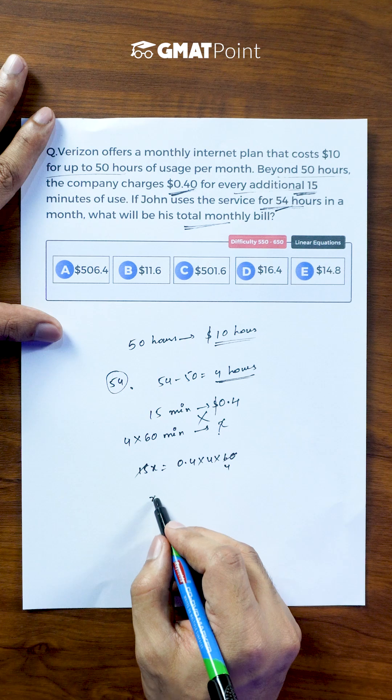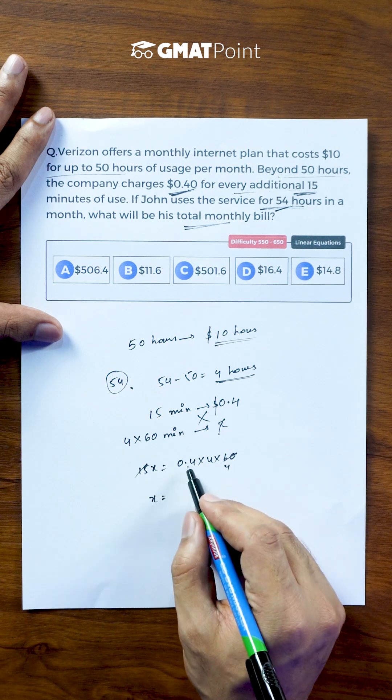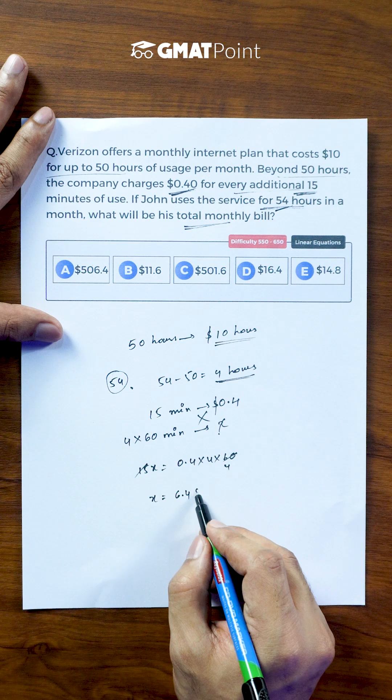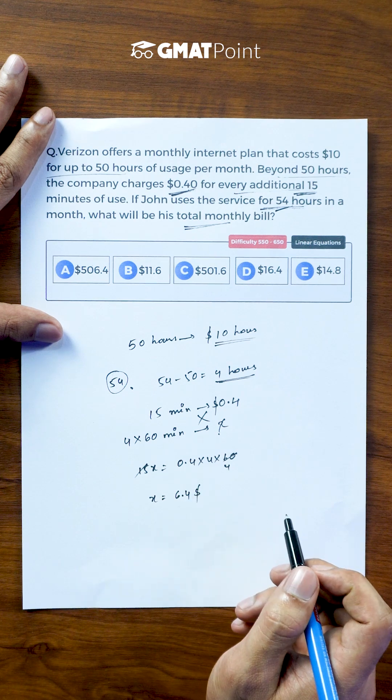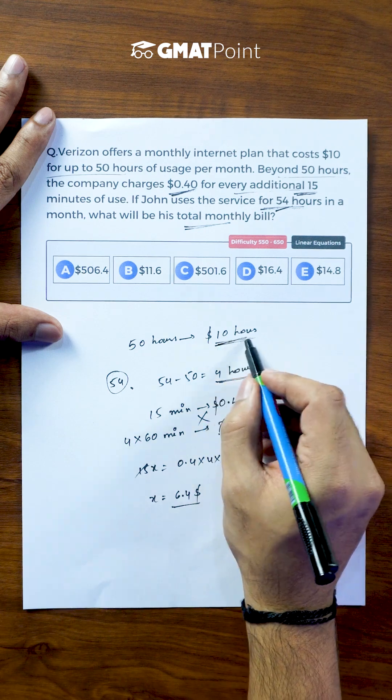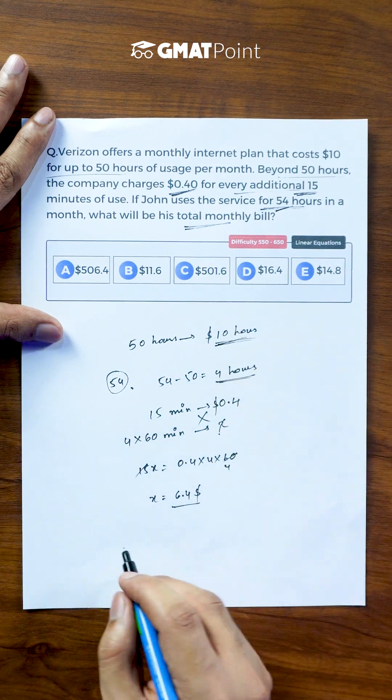15X is equal to 96, and we get X equal to 6.4. So the extra amount of bill can be calculated as $6.40, and an initial bill of $10 is already there.